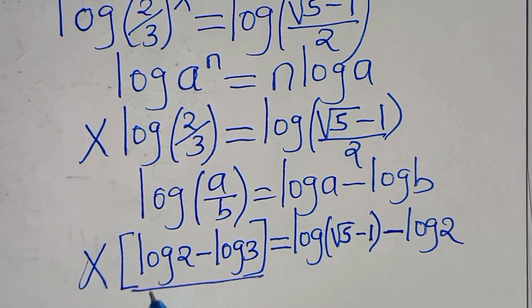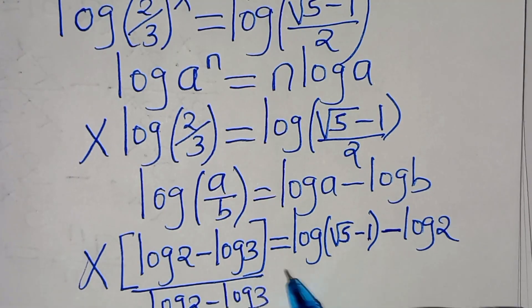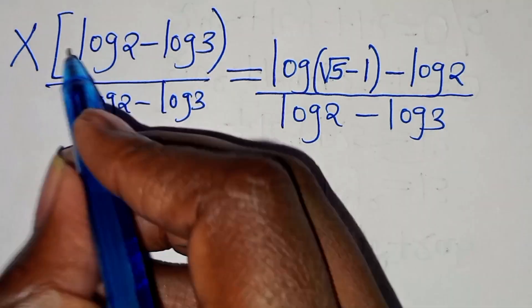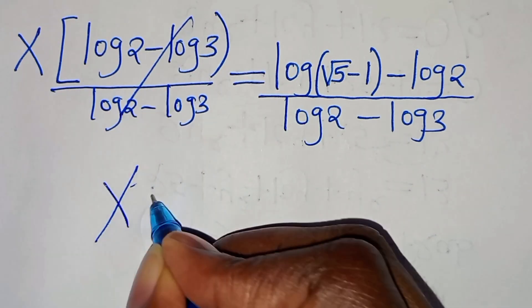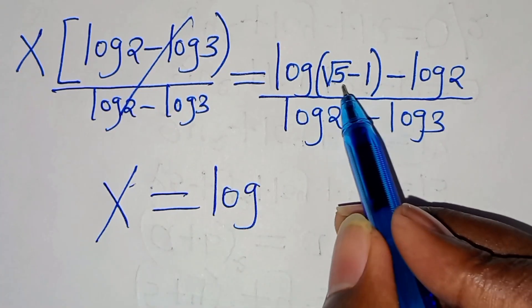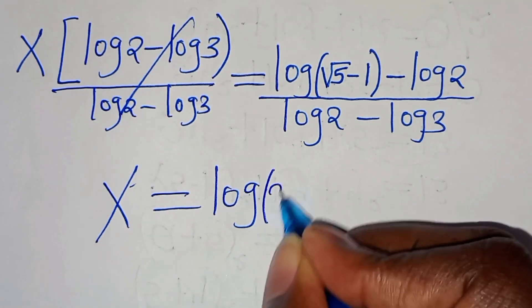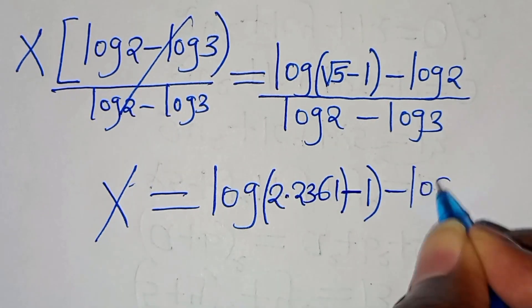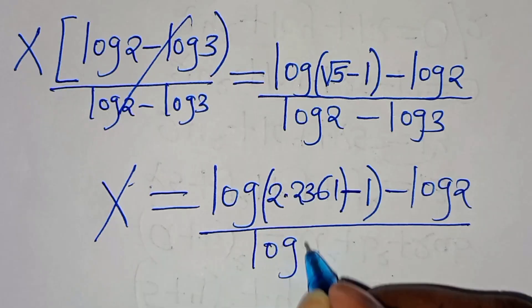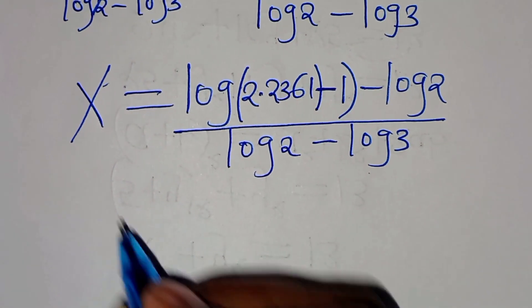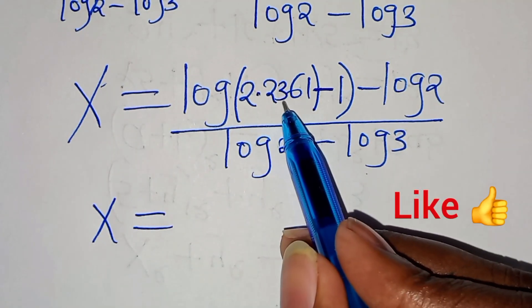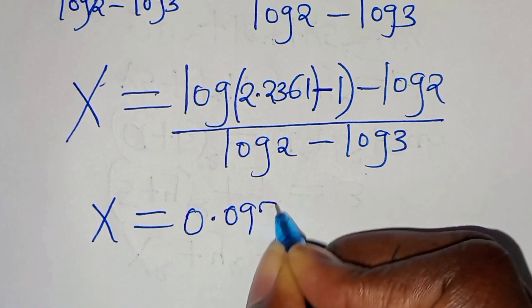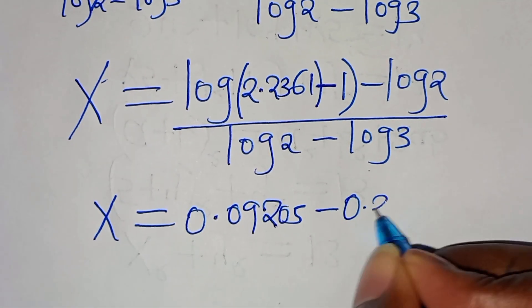Dividing both sides by (log 2 − log 3), we get x = [log(√5 − 1) − log 2] / (log 2 − log 3). Now √5 ≈ 2.2361, so log(2.2361 − 1) = log(1.2361) ≈ 0.09205, and log 2 ≈ 0.3010, log 3 ≈ 0.4771. Therefore x ≈ (0.09205 − 0.3010) / (0.3010 − 0.4771).